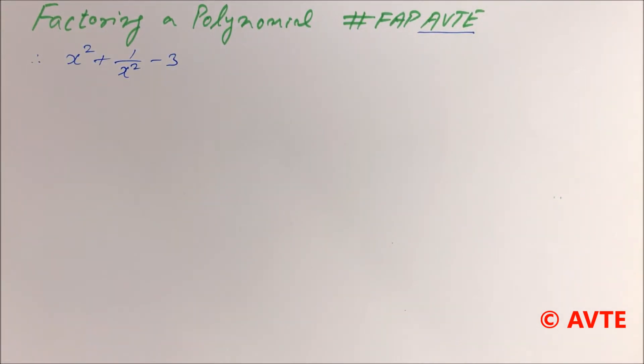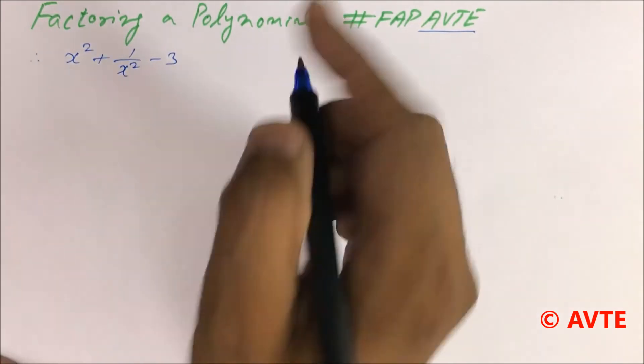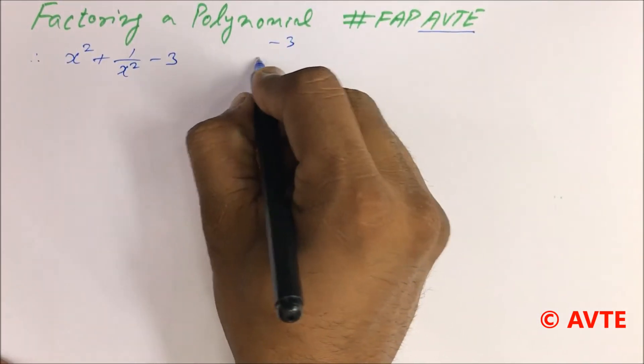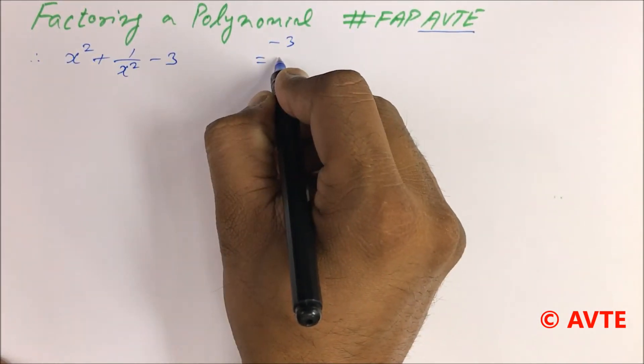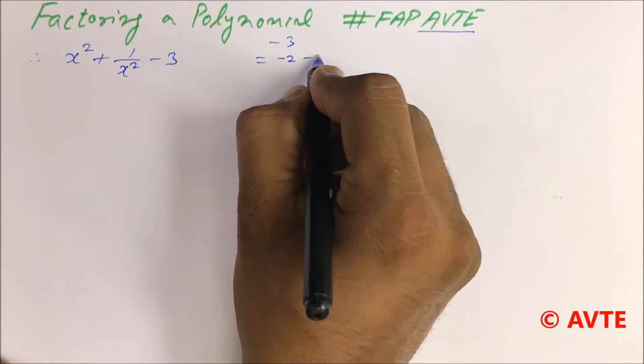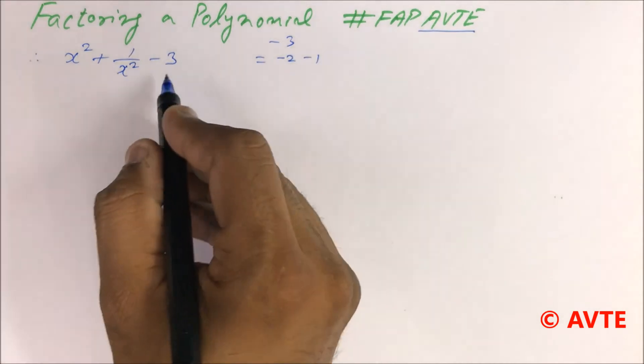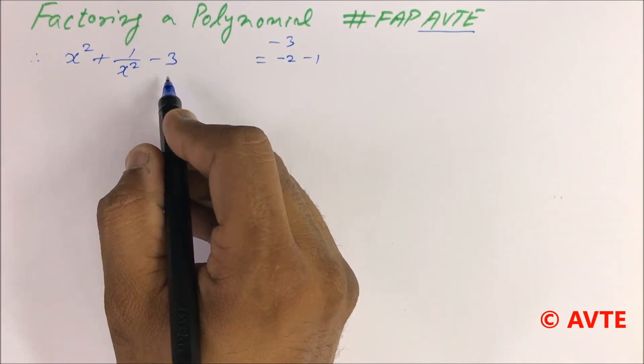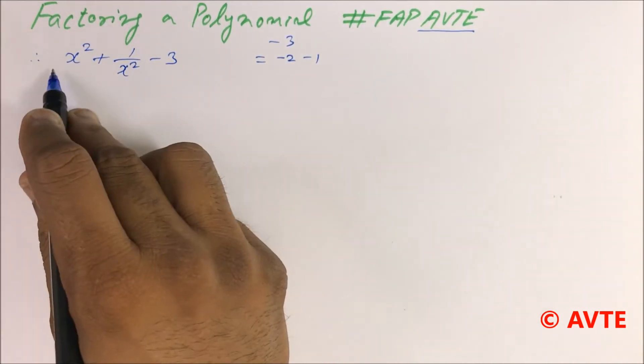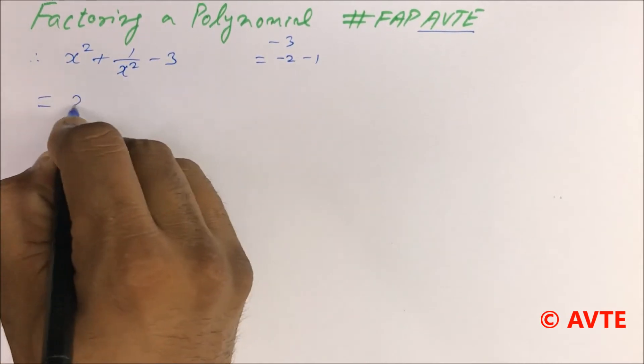Now you have two options to open minus 3. One, you can do it like minus 2 minus 1. And the second option is you can add and subtract 1 to the given polynomial, like this: x square plus 1 by x square minus 3.